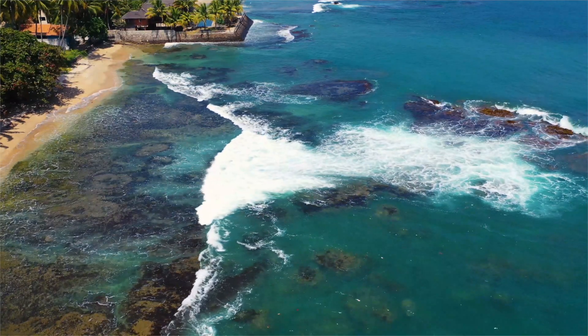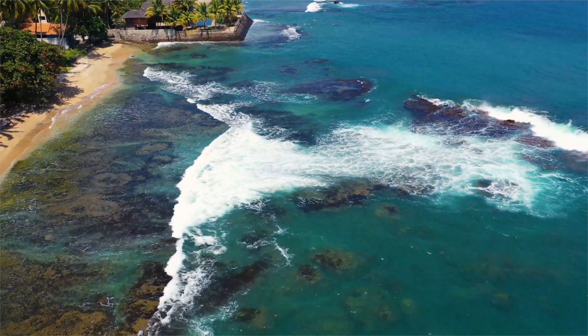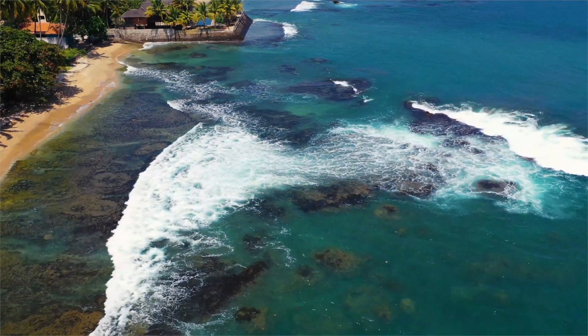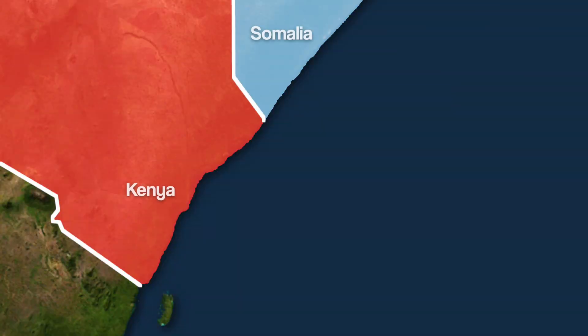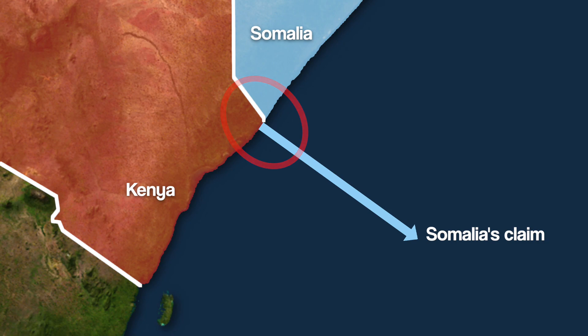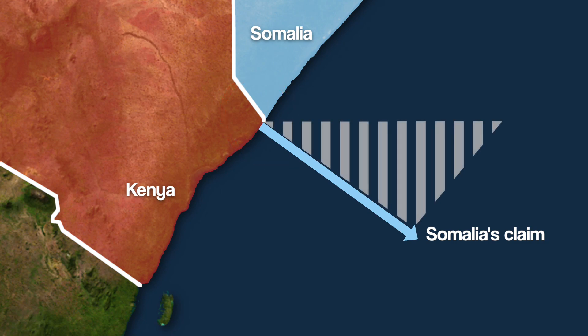Whichever country gets the ocean gets the resources it holds. At first glance, it seems like Somalia's claim simply follows the direction of the land border, right? But this is not the case, and this dispute is actually a lot more complex and interesting than that.